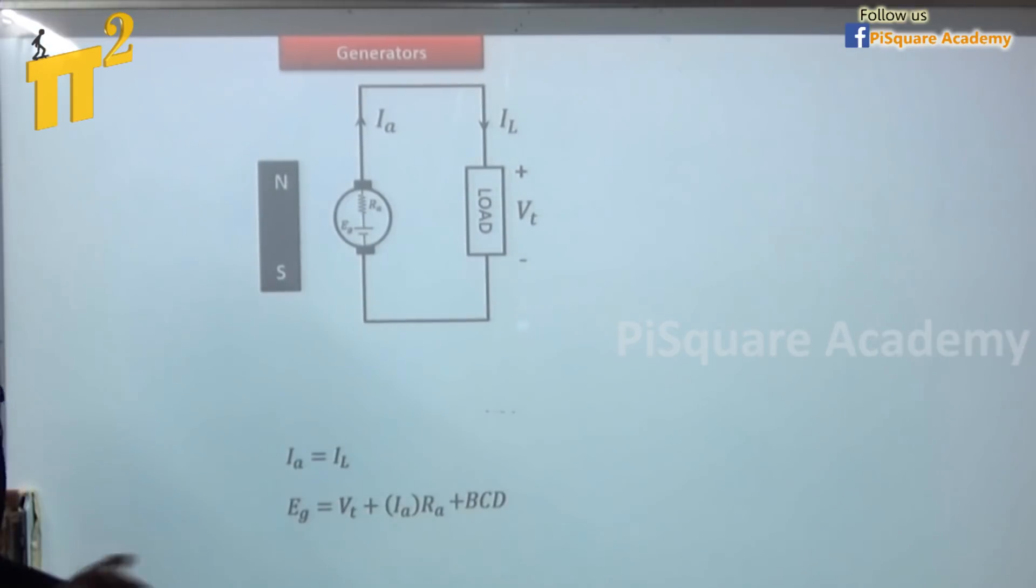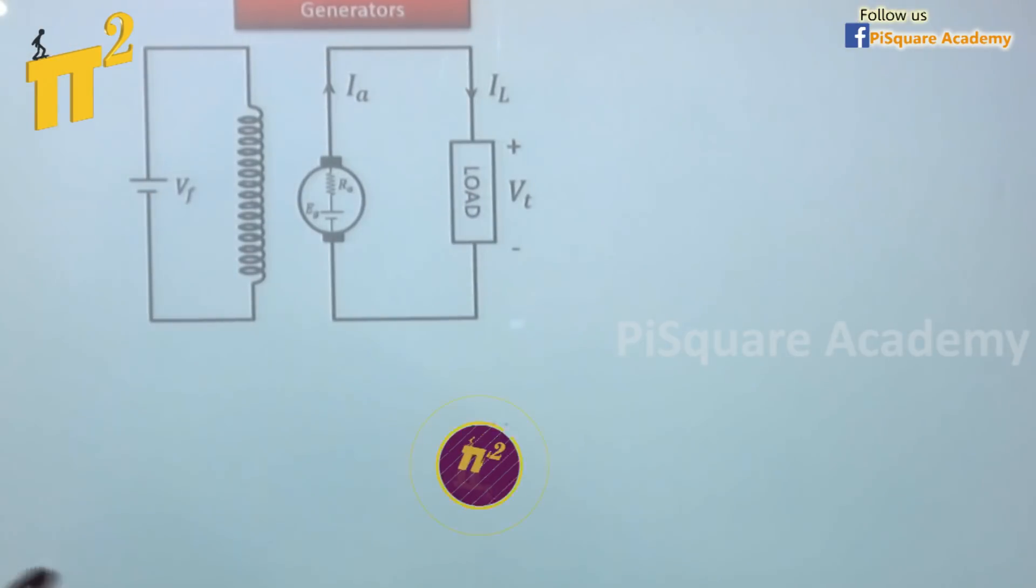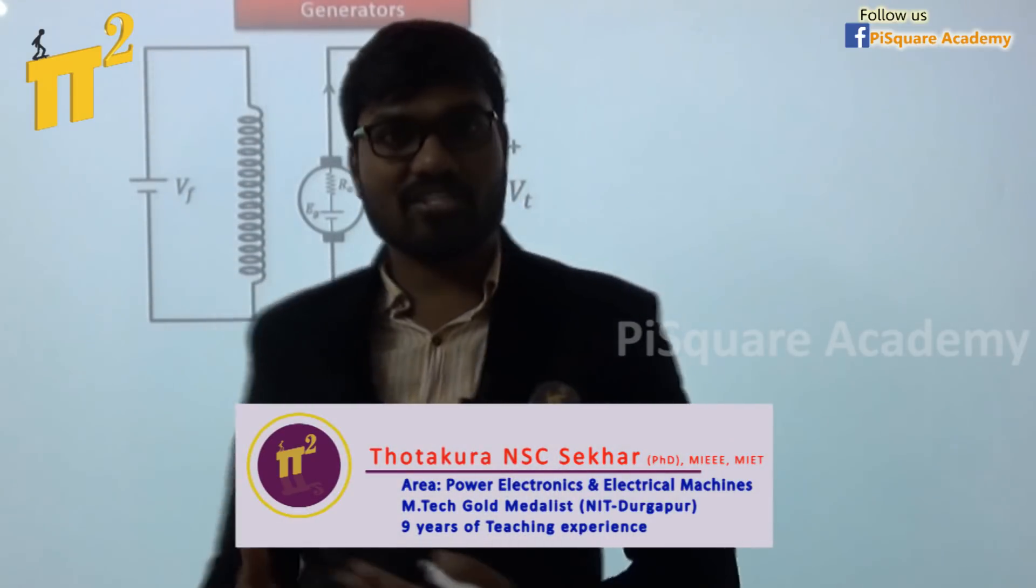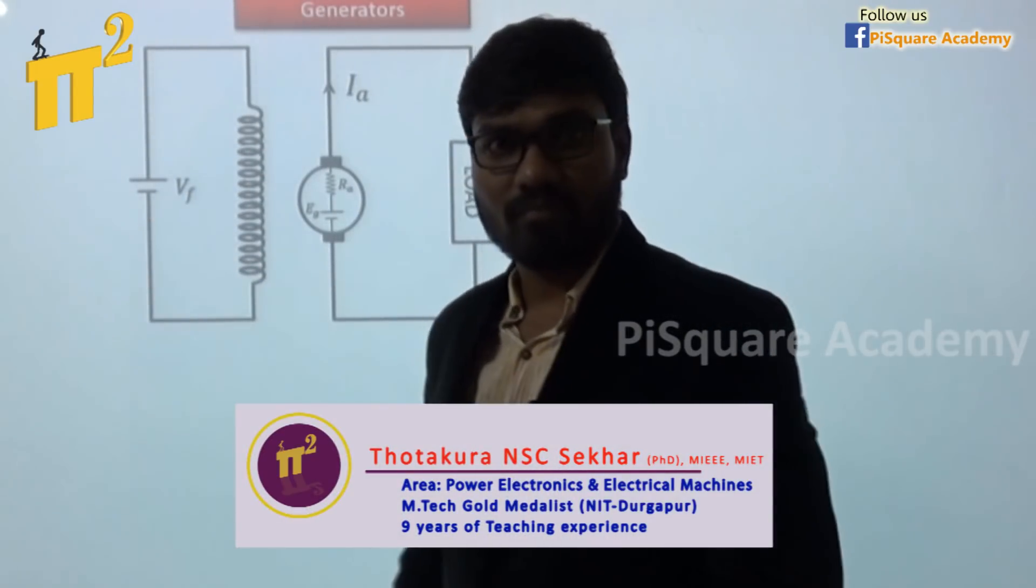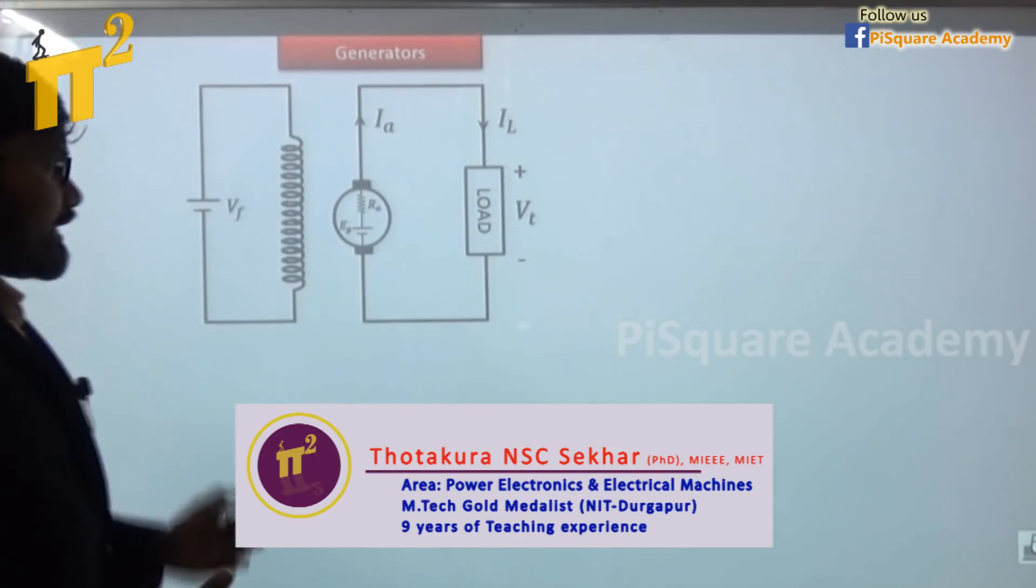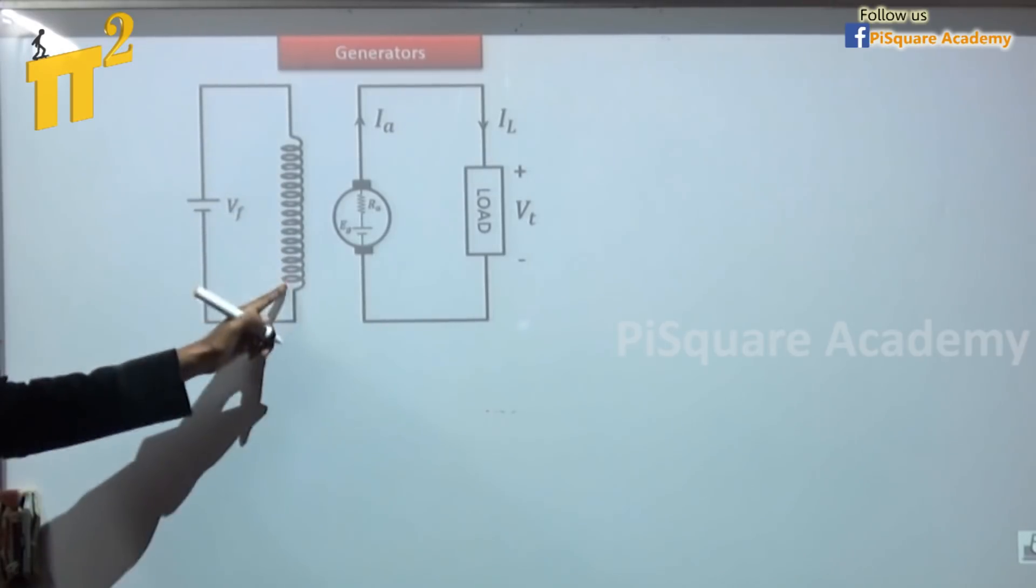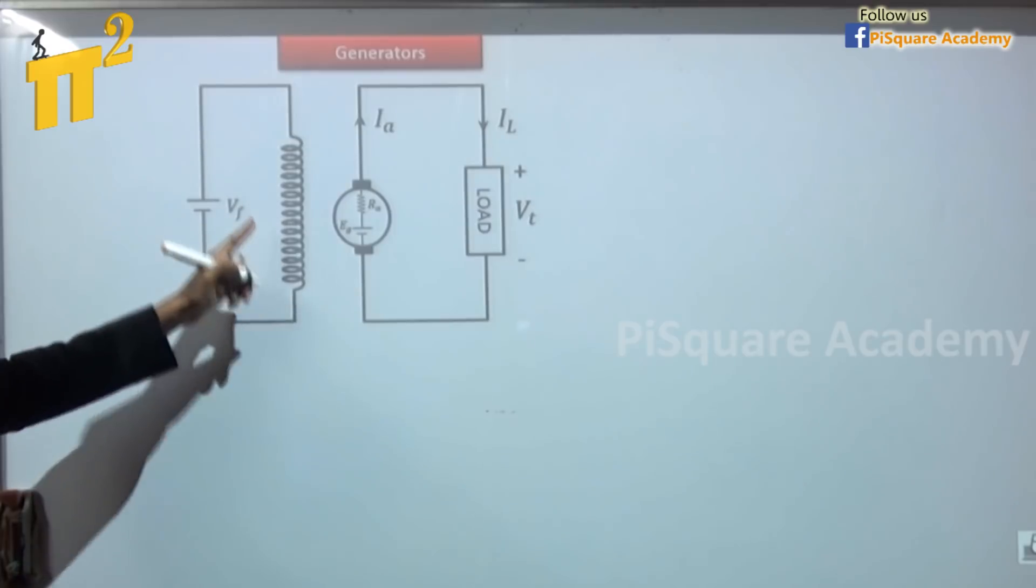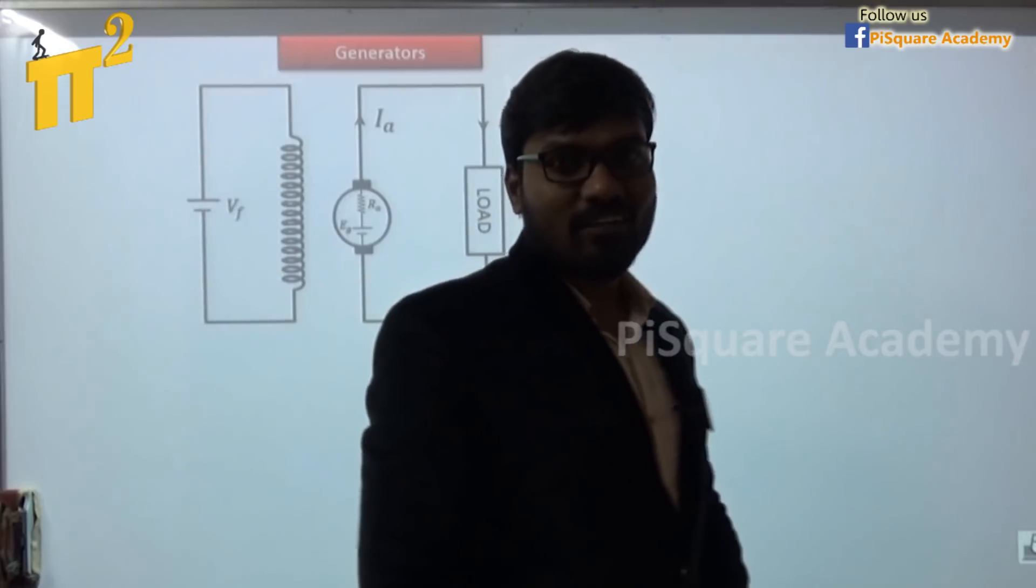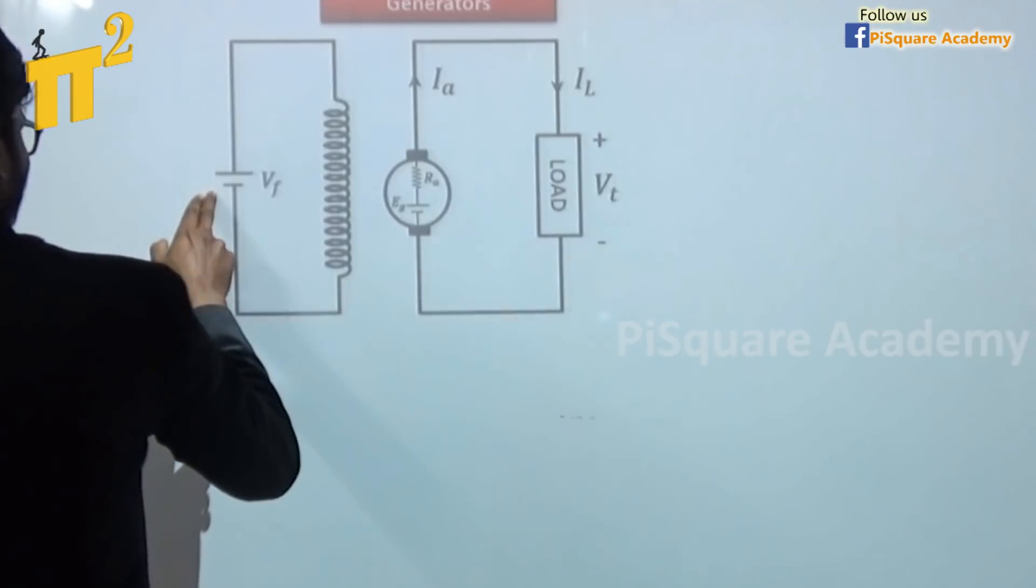Now, what if we replace this permanent magnet with an electromagnet? Because these electromagnets offer better control over flux. But of course, they require external electrical excitation, whereas permanent magnet doesn't require any electricity. In this case, we are using a separate power supply to excite the electromagnet, that is the field coil. So this type of generator is called, guess what? Yes, separately excited DC generator.